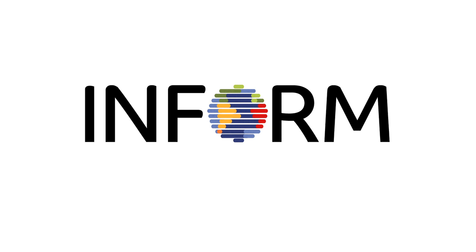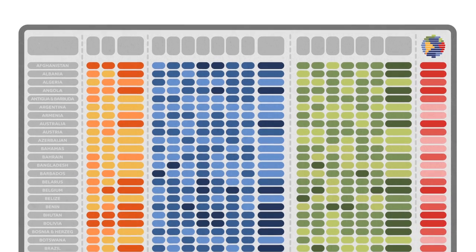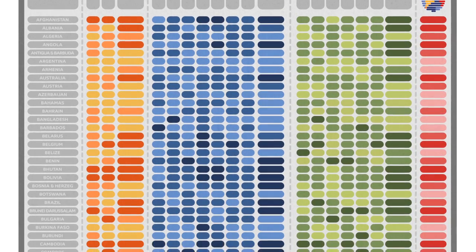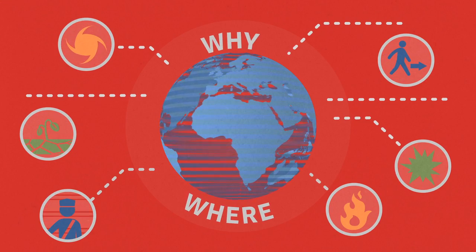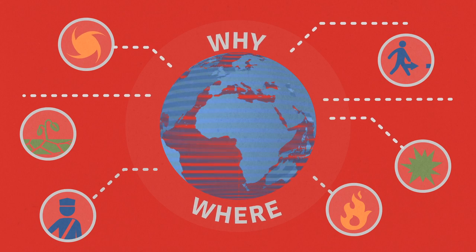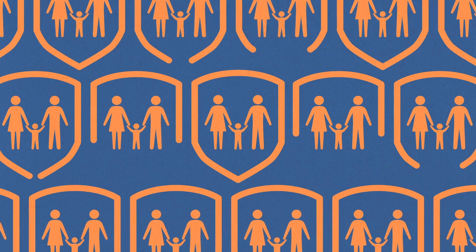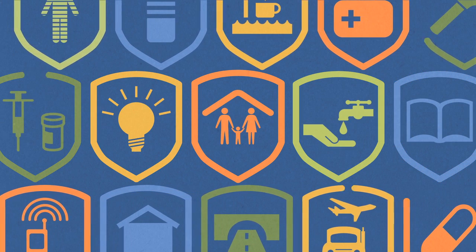INFORM stands for Index for Risk Management. It's a new way to measure the risk of humanitarian crises and disasters. INFORM can help identify where and why a crisis might occur, which means we can reduce the risks, build people's resilience, and better prepare for when crises do happen.